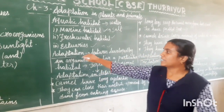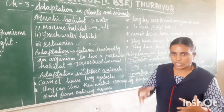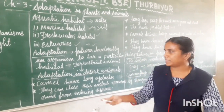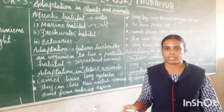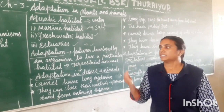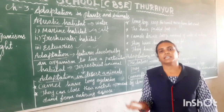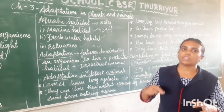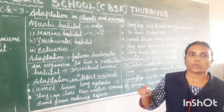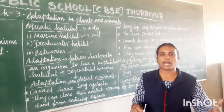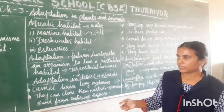Next topic is adaptation. Special features developed by an organism to live in a particular habitat are called adaptation. For example, fish lives only in water, and camel lives only in the desert. They are not able to live elsewhere because they have adaptations specific to their habitat.